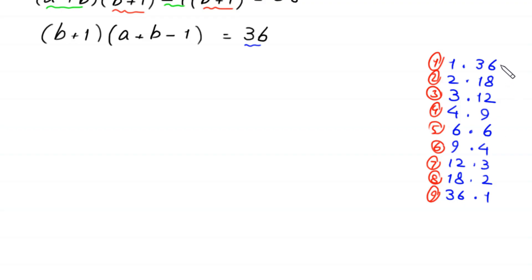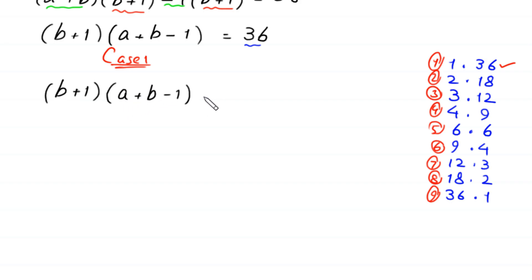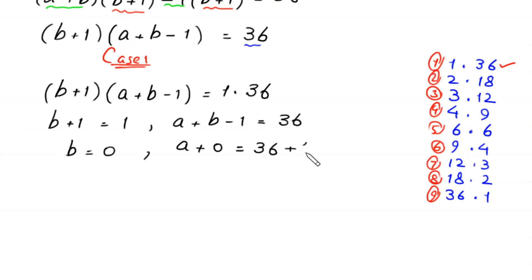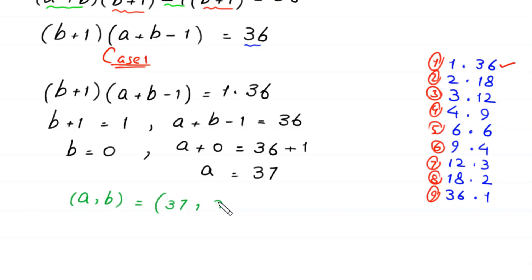In case 1, we set (b plus 1)(a plus b minus 1) equal to 1 times 36. So b plus 1 equals 1 and a plus b minus 1 equals 36. From here b equals 0, and substituting: a plus 0 minus 1 equals 36, so a equals 37. First pair of solutions: (a, b) = (37, 0).